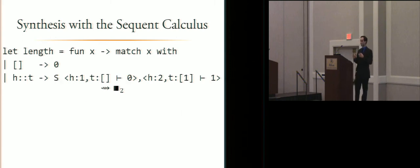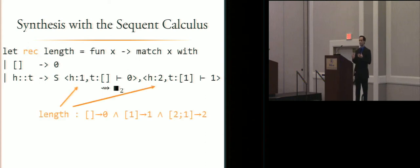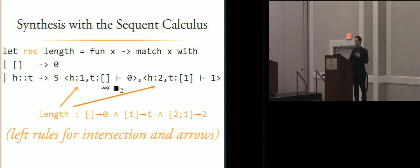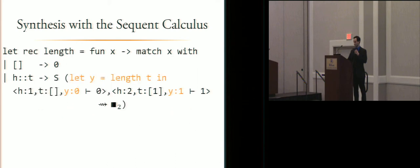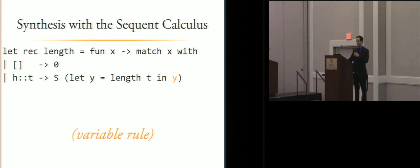And then to solve the second branch, we again recursively call. So we can add length to the context and find a type that describes it. We can use the left rules for intersection arrows to break it up, to a variable Y, and add that to the context. So we can use the left binding and generate our synthesized program.